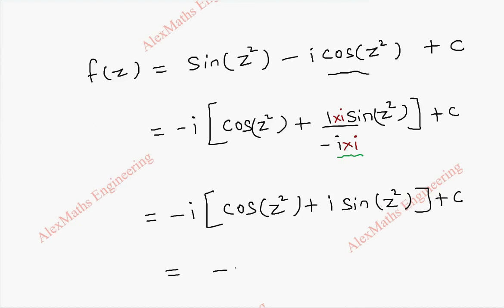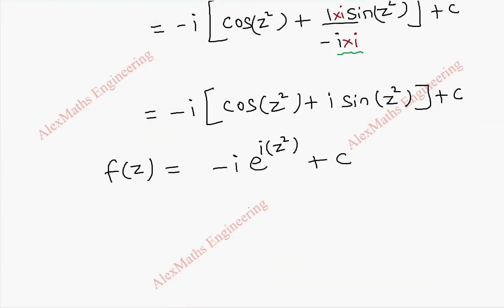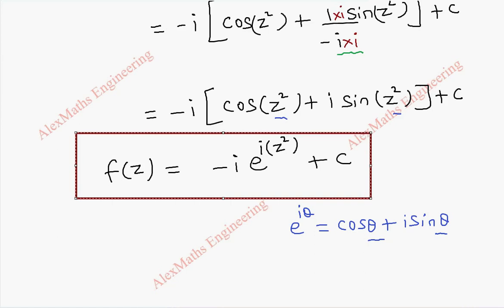This can be rewritten as e to the power iz squared using Euler's formula, because we know that e to the power i theta equals cos theta plus i sin theta. In place of theta we have z squared, so we write it as e to the power iz squared. Thus we got f of z, which is minus i times e to the power iz squared plus c.